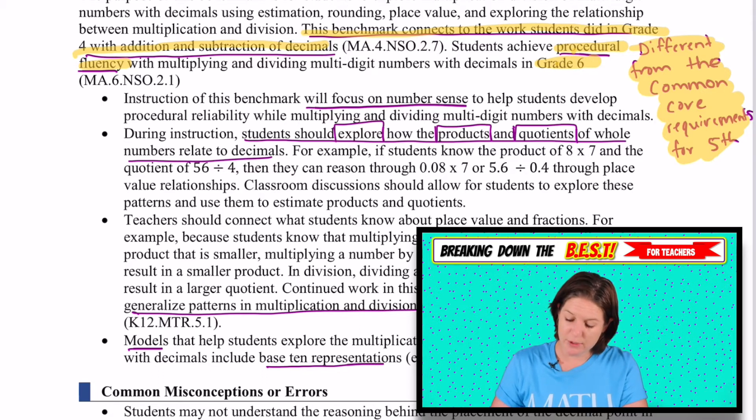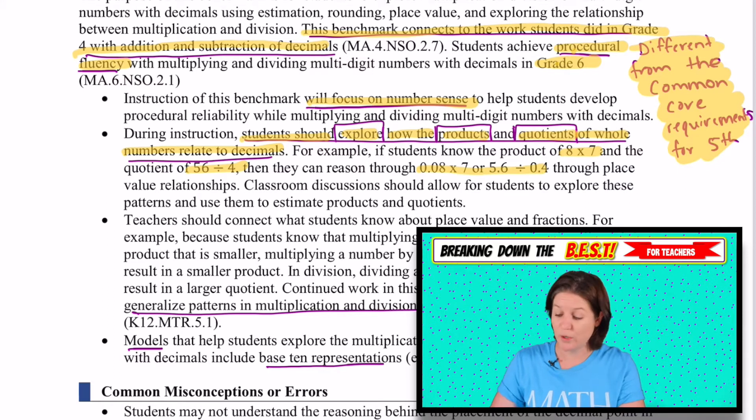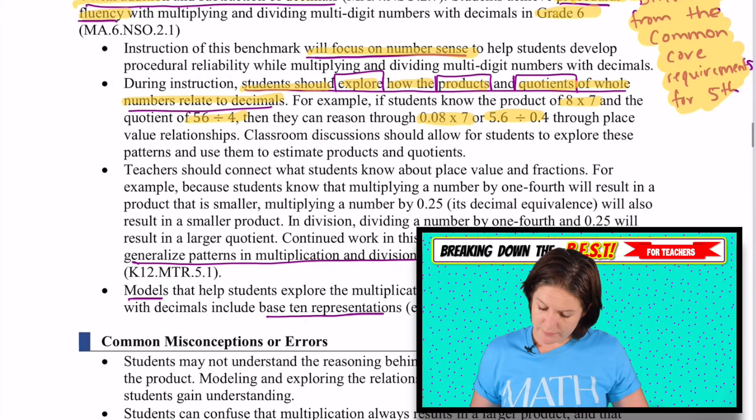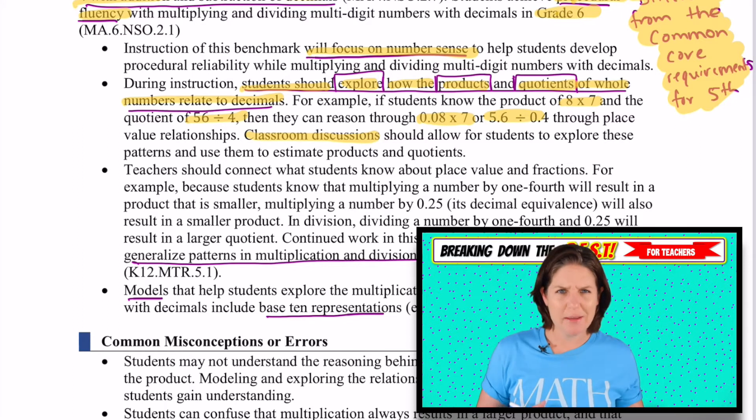Instruction of this benchmark will focus on number sense. Students should explore how the products and quotients of whole numbers relate to decimals. So if I know what 8 times 7 is and what 56 divided by 4 is, I can use those to help me with problems or expressions like that. See, there's no equal sign present, we have expressions here. Lots of classroom discussions to discuss what's happening with these. Have students come to the understanding of what's happening with that decimal point when we're doing this.